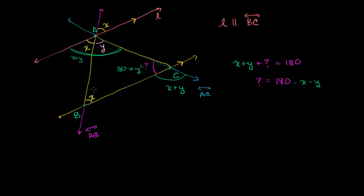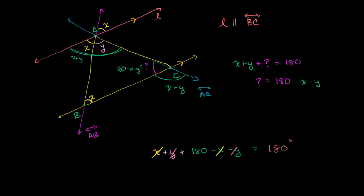Now given how we've set up the three interior angles of the triangle, let's add them up. We have X, then Y, then this third angle which is 180 minus X minus Y. The X cancels with negative X, and the Y cancels with negative Y, and you can see they add up exactly to 180 degrees. We've just proved, using what we know about parallel lines, that the interior angles of any triangle add up to 180 degrees.